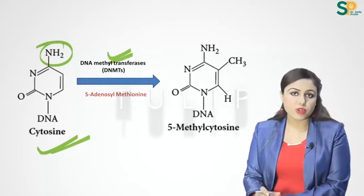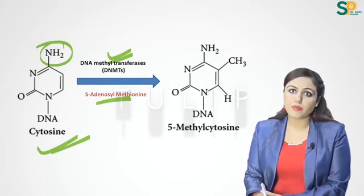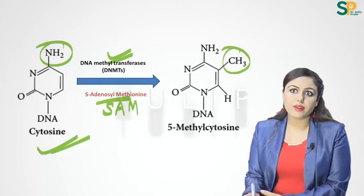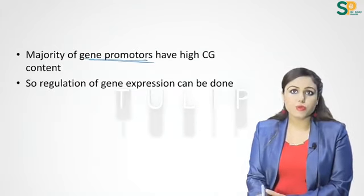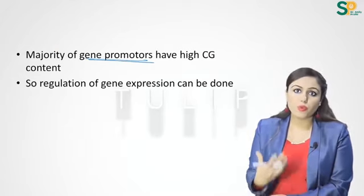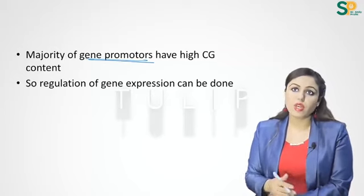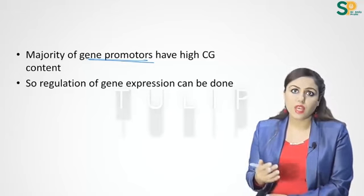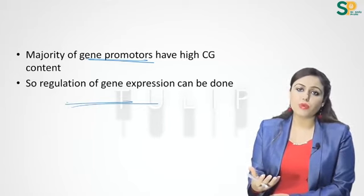Cytosine has a methyl group added at the number 5 position, forming 5-methylcytosine. This is done with the enzyme DNA methyltransferases (DNMTs), and the methyl group is donated by SAM (S-adenosyl methionine). Gene promoters — sites upstream to the gene — are rich in CG sites, allowing regulation of gene expression.